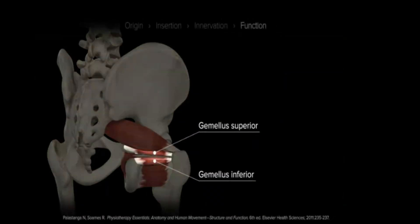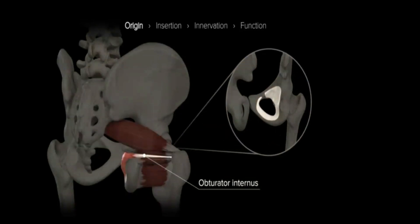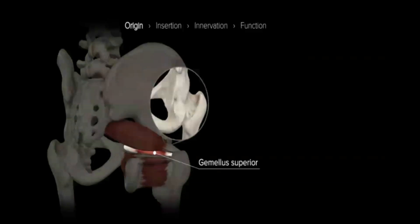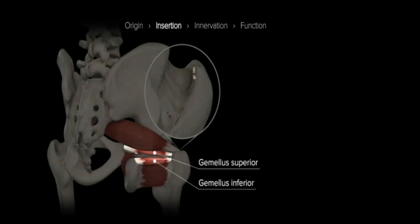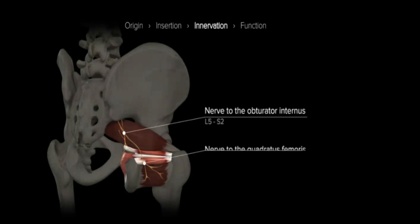The gemelli are two accessory fascicles aligned with the tendon of the obturator internus. The long tendon of the obturator internus makes a path between the gemellus superior and gemellus inferior, where the muscle originates in a flat, fan-shaped form from the inner surface of the obturator membrane and the margin of the obturator foramen. It then passes between the gemellus superior and inferior before inserting above the trochanteric fossa on the medial surface of the greater trochanter. The gemellus superior originates on the posterior surface of the ischial spine, while the gemellus inferior originates more distally on the ischial tuberosity. Both course laterally to their insertion points on the medial aspect of the greater trochanter. Innervation to the superior and inferior gemelli and the obturator internus comes from the nerve to the obturator internus and the nerve to the quadratus femoris.